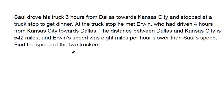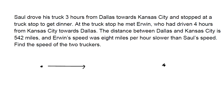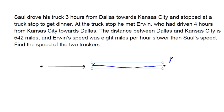Saul drove his truck for three hours from Dallas towards Kansas City. So here's Dallas, here's Kansas City, and Saul is driving in this direction. It doesn't say he made it there — he drove three hours and then stopped to get dinner. At the truck stop he meets another trucker, Erwin, who has driven four hours from Kansas City towards Dallas. They meet up here in the center.